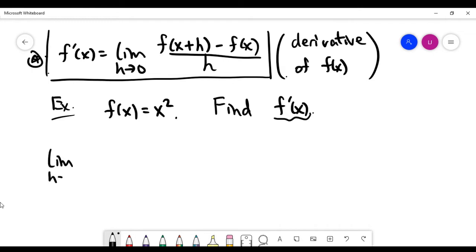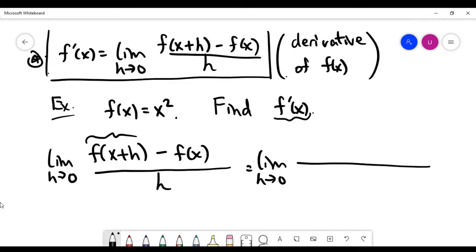We have to look at the definition: limit h goes to zero for a big fraction. The top is f of x plus h minus f of x, the bottom is h. Let's try to resolve this limit. The first term here, based on this function x squared, is just x plus h squared, minus f of x which is x squared. And the bottom is just h.